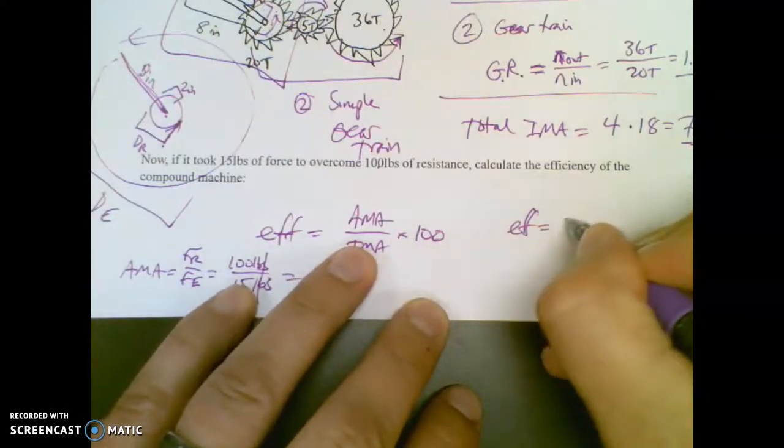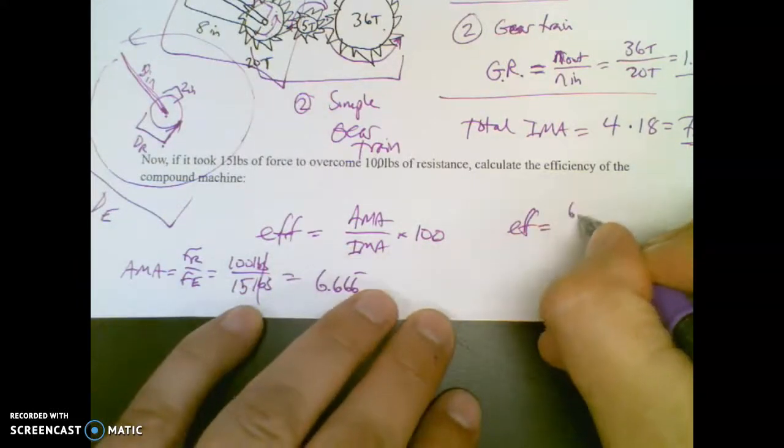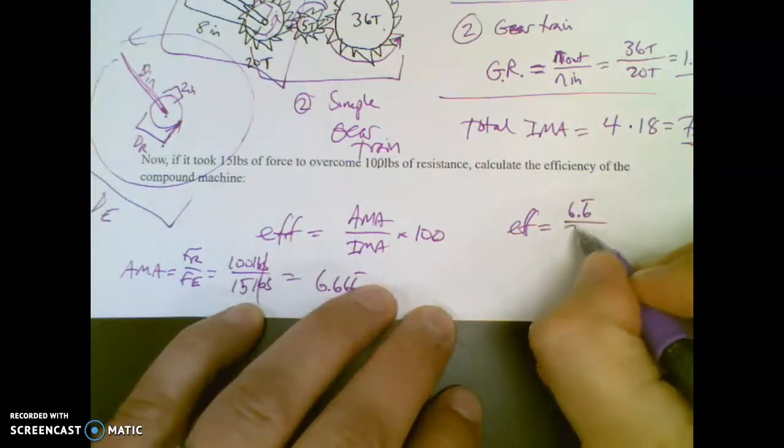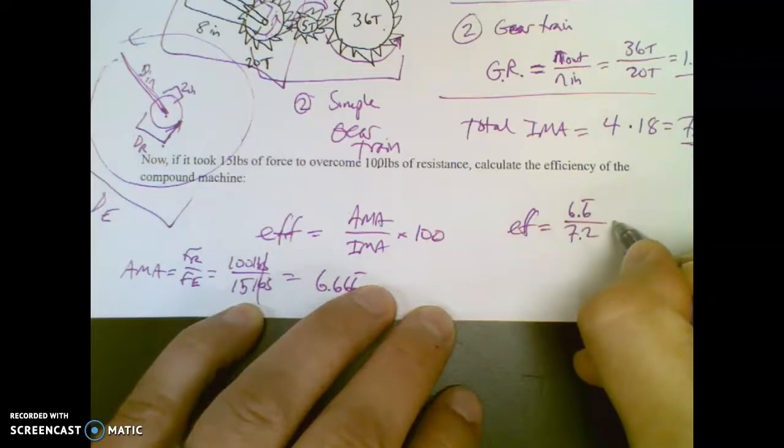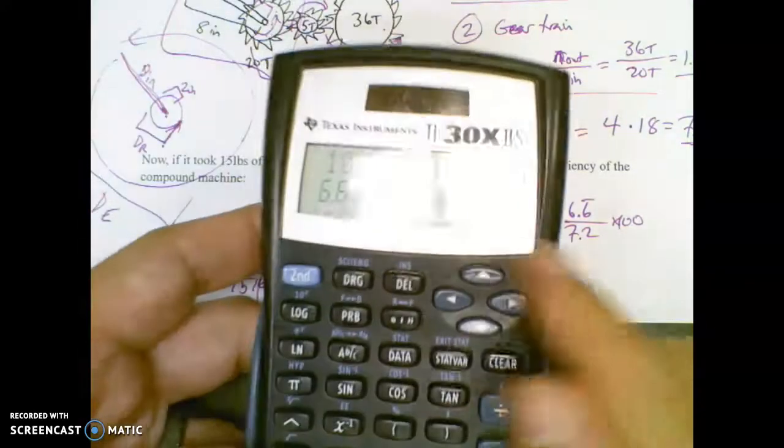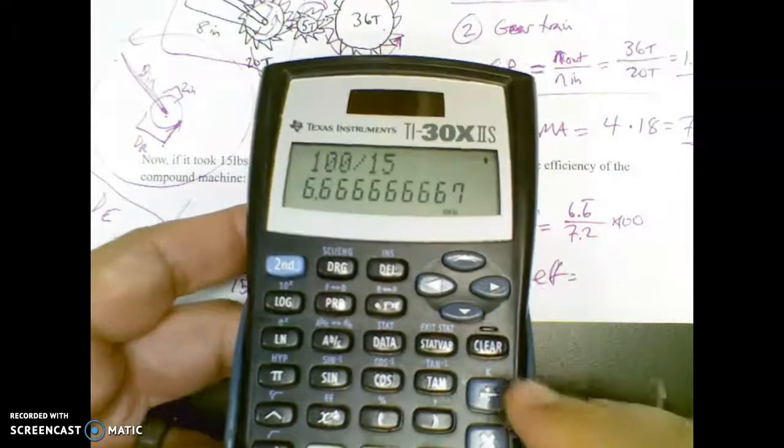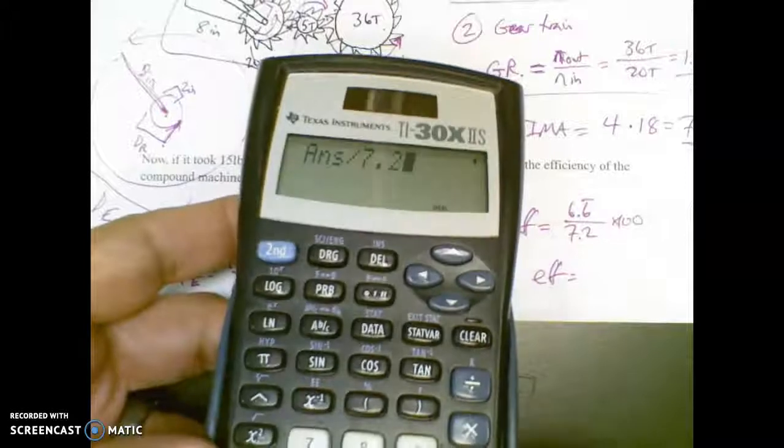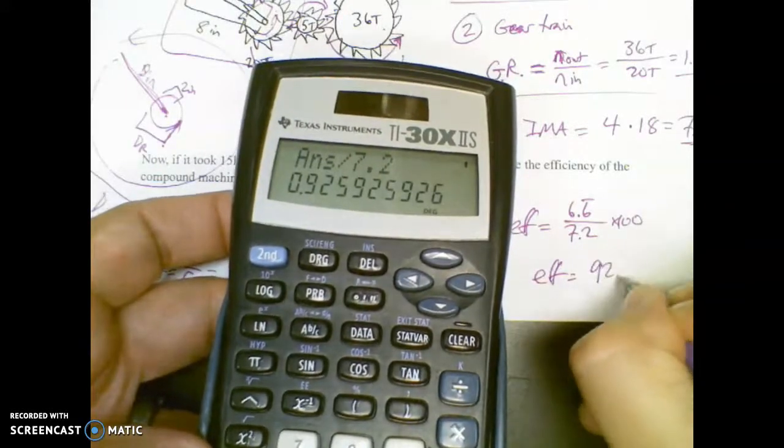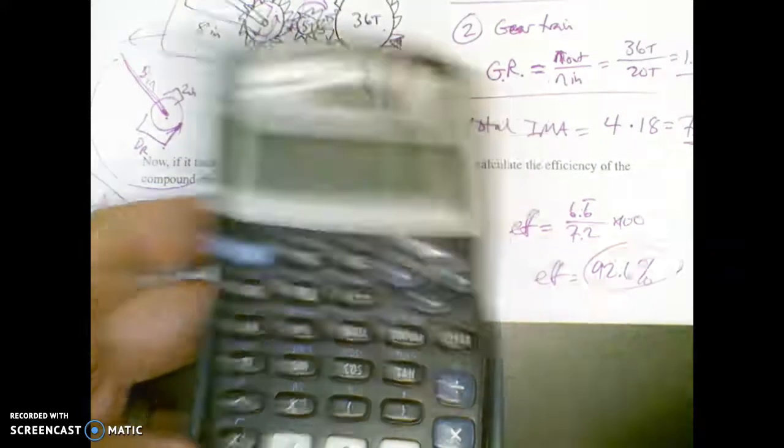And in the end, I want to make sure I put AMA. So here's efficiency. AMA is 6.6 repeating over IMA, which is 7.2 on the dot, times 100. I'm going to take my old answer. Remember, use exact answers. Don't round it and round it again, that's bad news. And that comes out to be 92.6% efficient. That's pretty efficient.